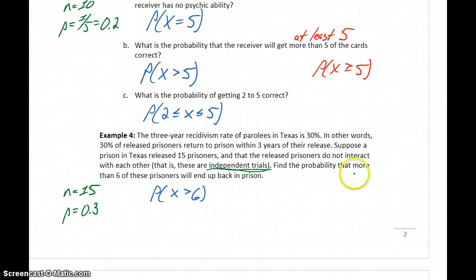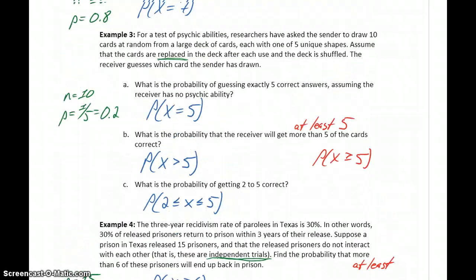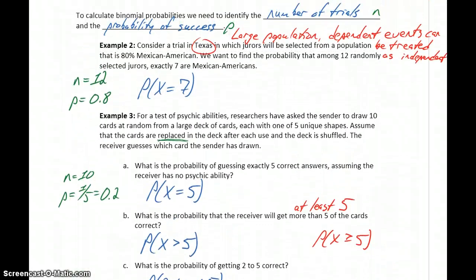Or again, a similar statement, if it said that at least six, then we'd want to calculate the probability that X is greater than or equal to six. So at least six meaning six or more. So we have our probability statements established. Let's go back to example two and now look at how we'll calculate these probabilities in StatCrunch.